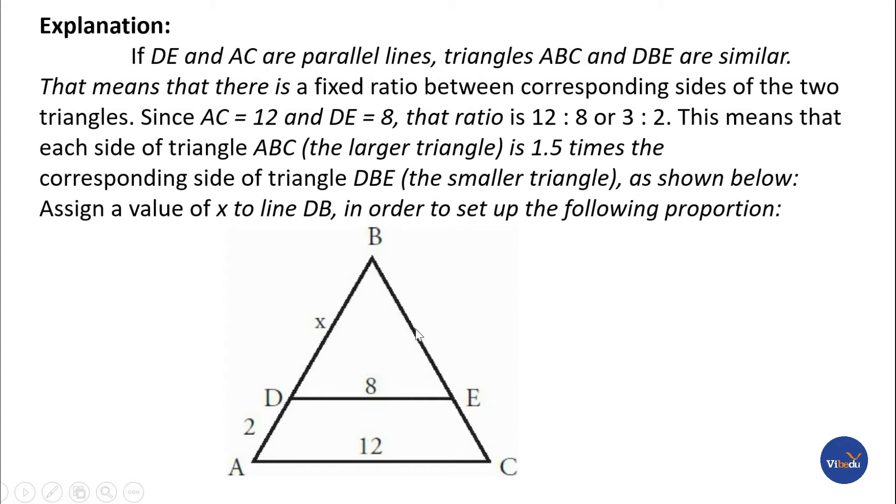Since DE and AC are parallel lines, triangles ABC and DBE are similar. AD is 2 already, and we assign DB as X, so the total AB equals 2 plus X.